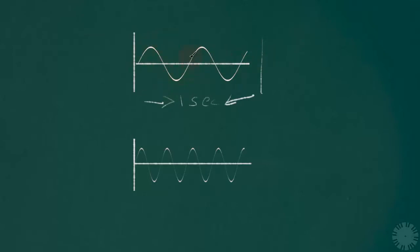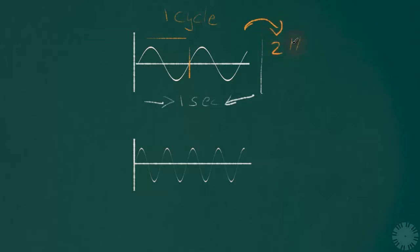A cycle goes: peak, trough, and back. This portion here is one cycle, and this part here is another cycle. So how many cycles is this wave doing every second? Peak, trough, and back — peak, trough, and back. This wave is doing two cycles in one second. We can say the frequency of this wave is 2 Hertz.